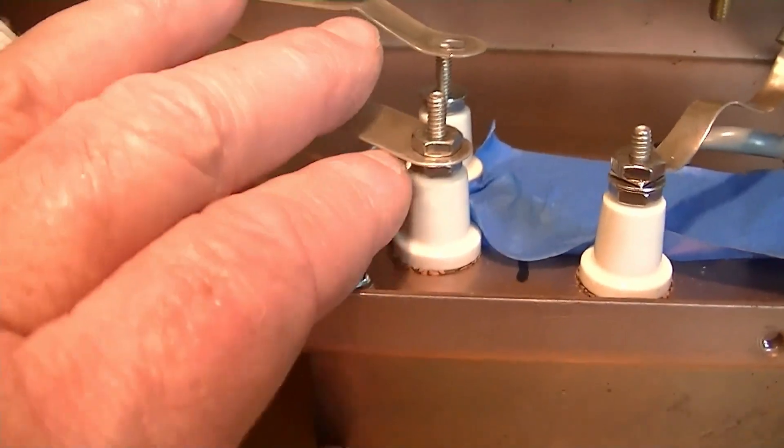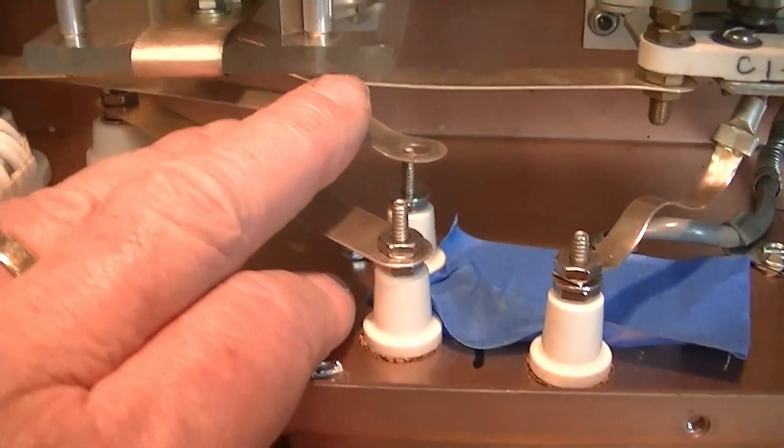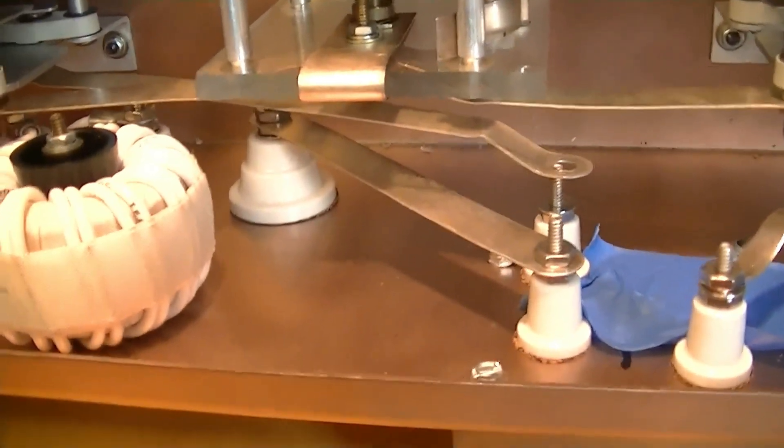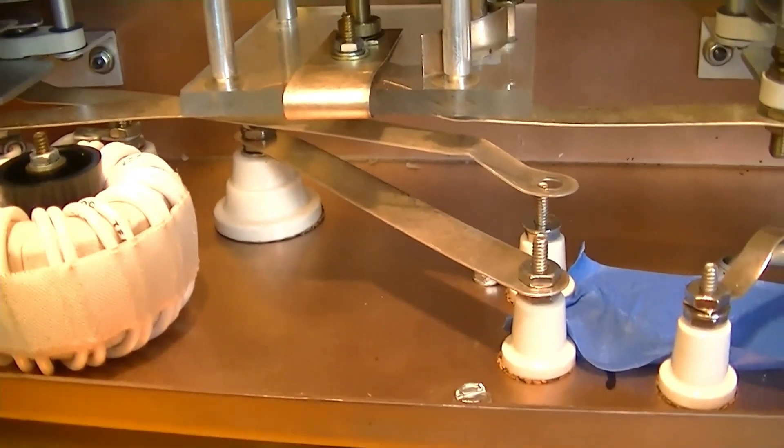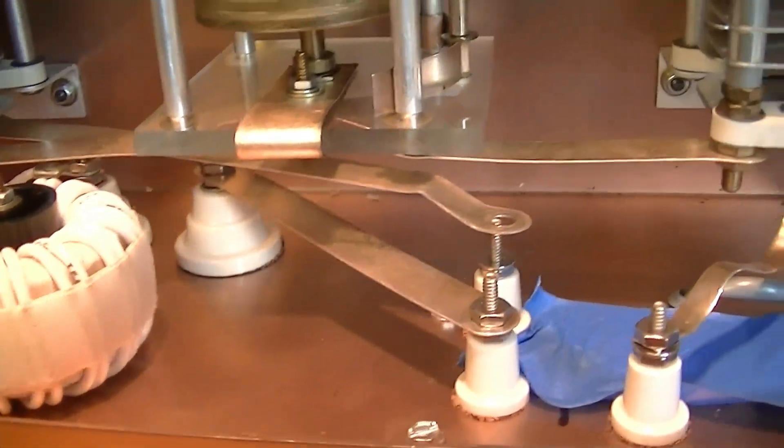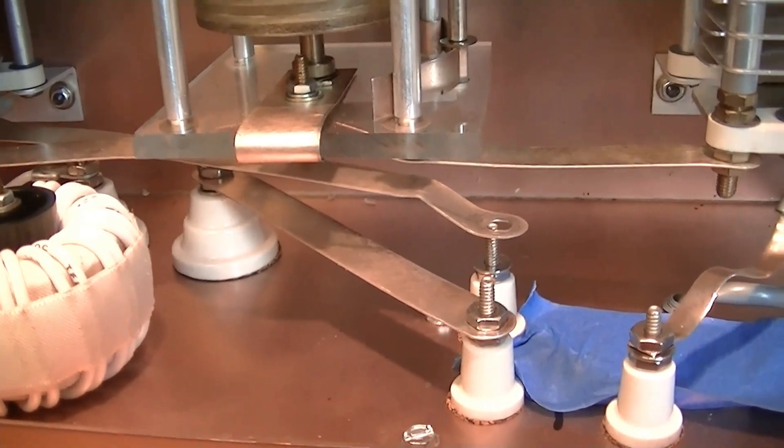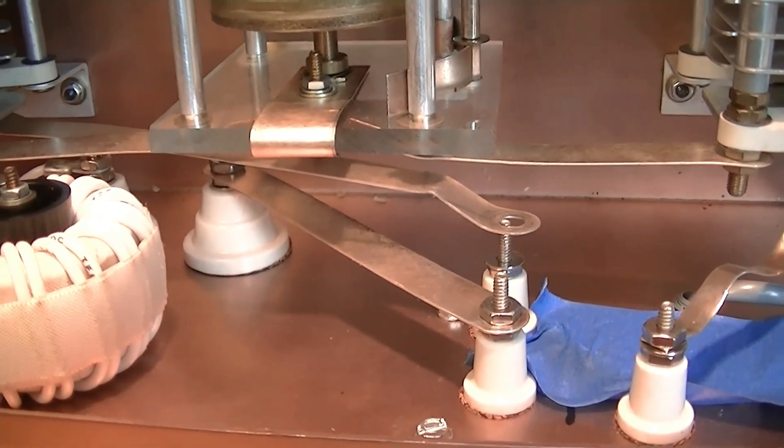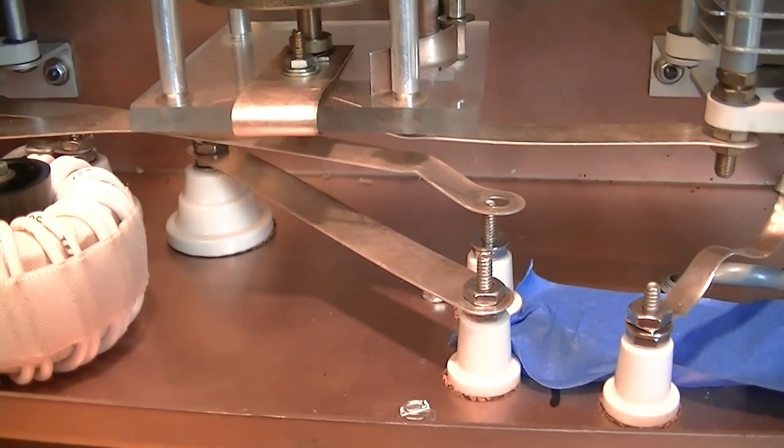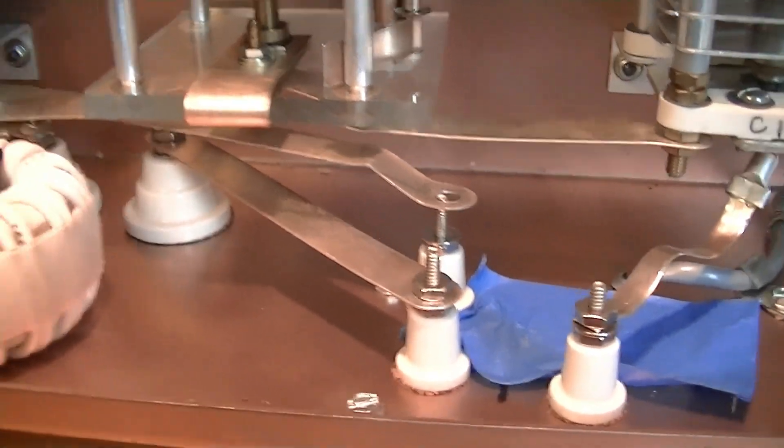This is carrying the full output power of the transmitter, a kilowatt and a half or whatever it is that you run, and if there's a high SWR the voltages can really climb up there and so can the current. So you really want these connections clean, bright, and tight.